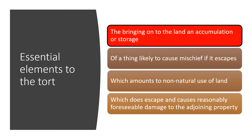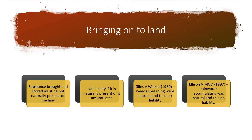The first element — bringing onto the land and accumulation or storage — means the substance is brought and stored but is not naturally present on the land. If it already exists there, it will not be considered to be brought onto the land, so no liability if it's naturally present or accumulates naturally. For example, in Giles v Walker, weeds spreading were natural and thus there is no liability. In Ellison v the Ministry of Defence, rainwater accumulating was natural and there is no liability when it escaped. Contrast this with Rylands and Fletcher, where creating a reservoir for the mill was a non-natural, deliberate accumulation.